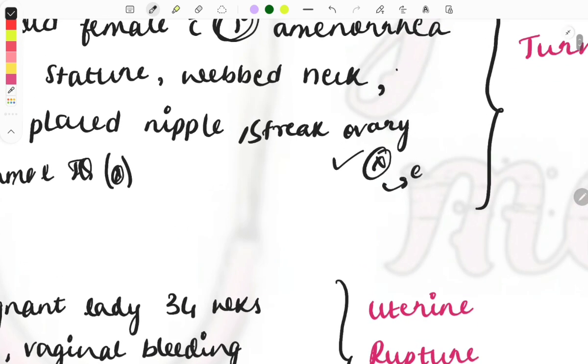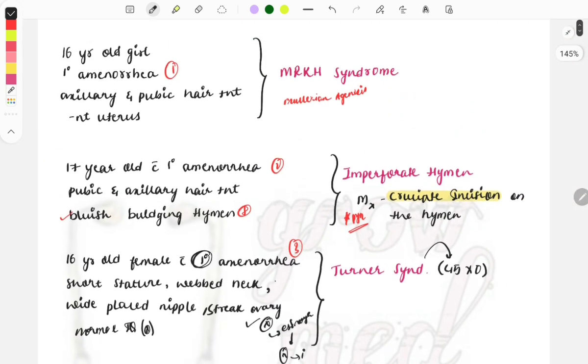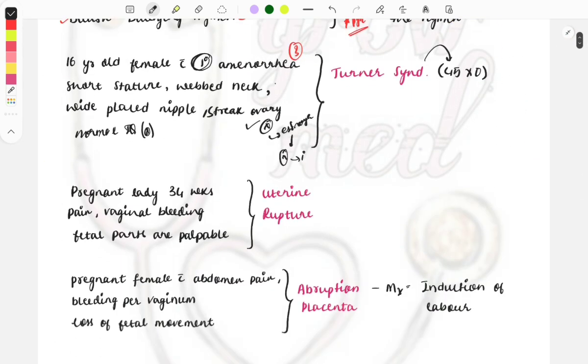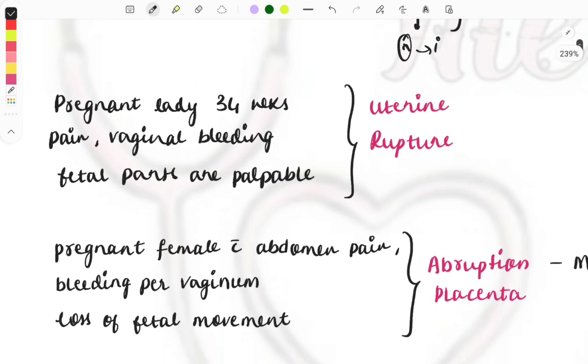The reason for primary amenorrhea in this female is due to streak ovaries. The ovaries are not working properly, they will not be producing estrogen, so the proliferation of the endometrium will not be happening, causing primary amenorrhea. These are the three important primary amenorrhea cases.